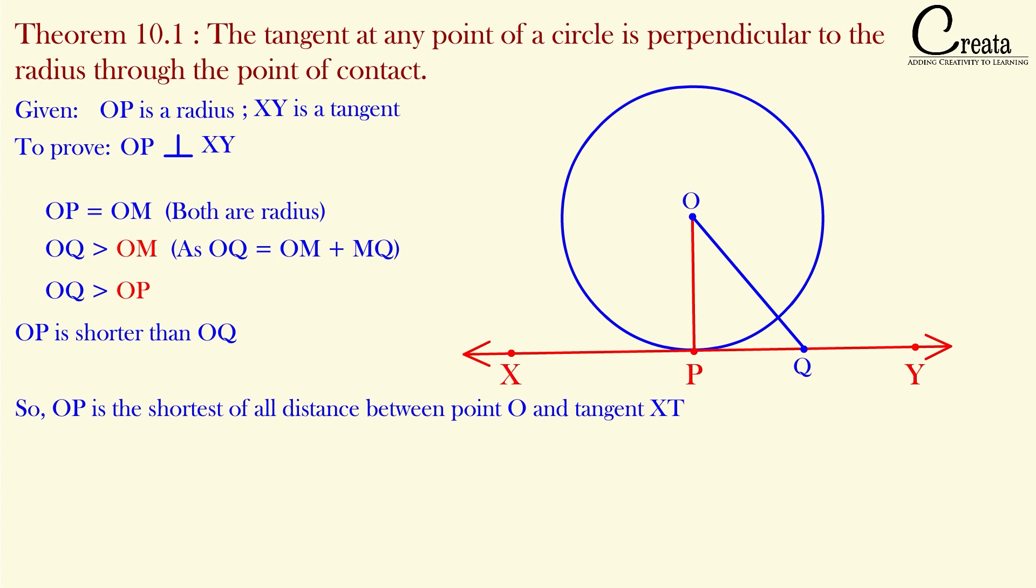We just understood the concept that the shortest distance between any point and any line is the perpendicular distance. Since OP is the shortest of all distances, OP will be perpendicular to the tangent XY. That is the proof of our theorem.